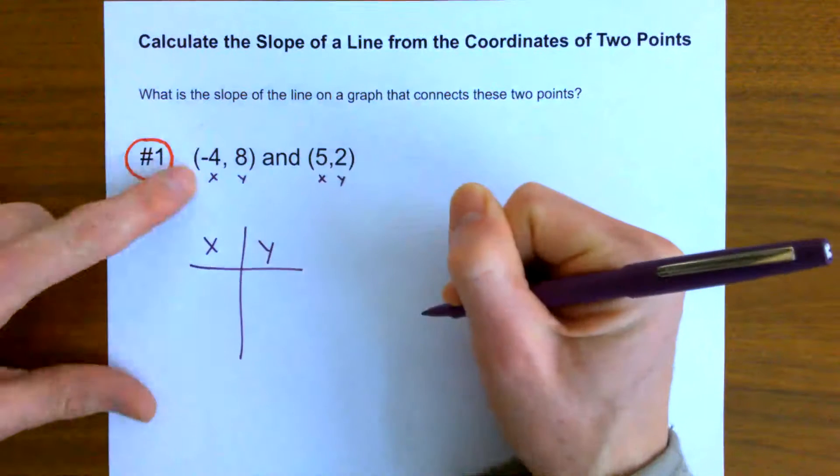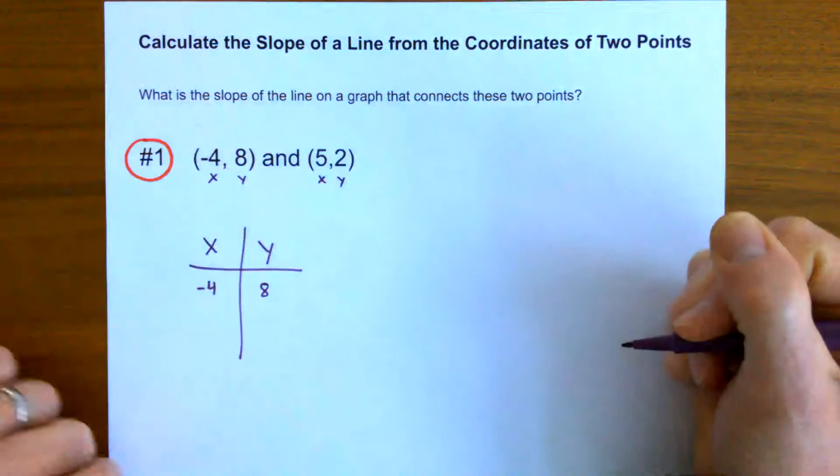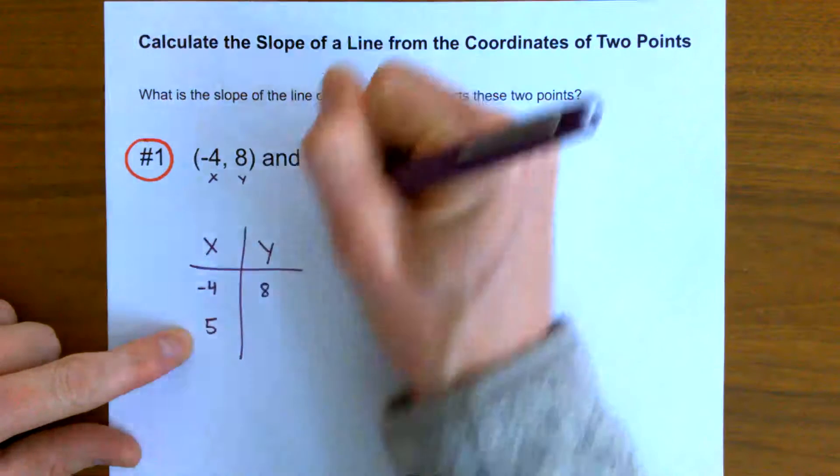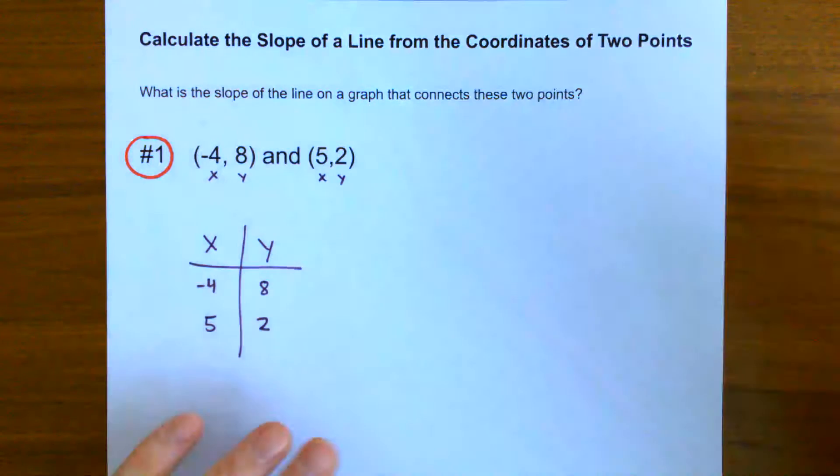So I've got x's and y's in a data table. The first point has negative four as my x value and eight as my y value. The next point has five as an x value and two as my y value.